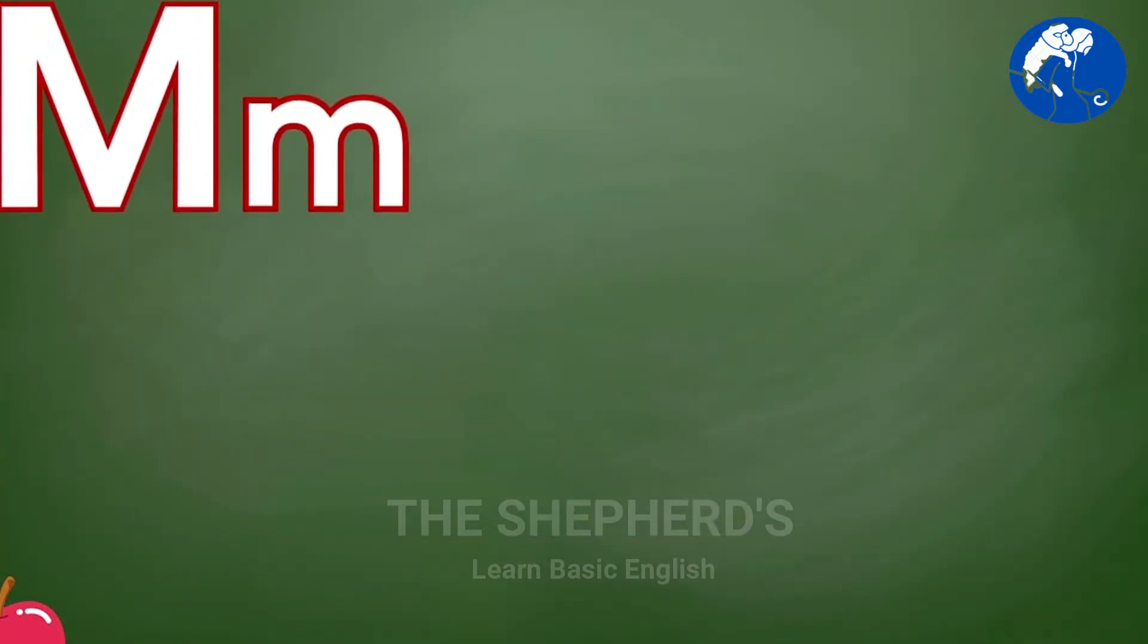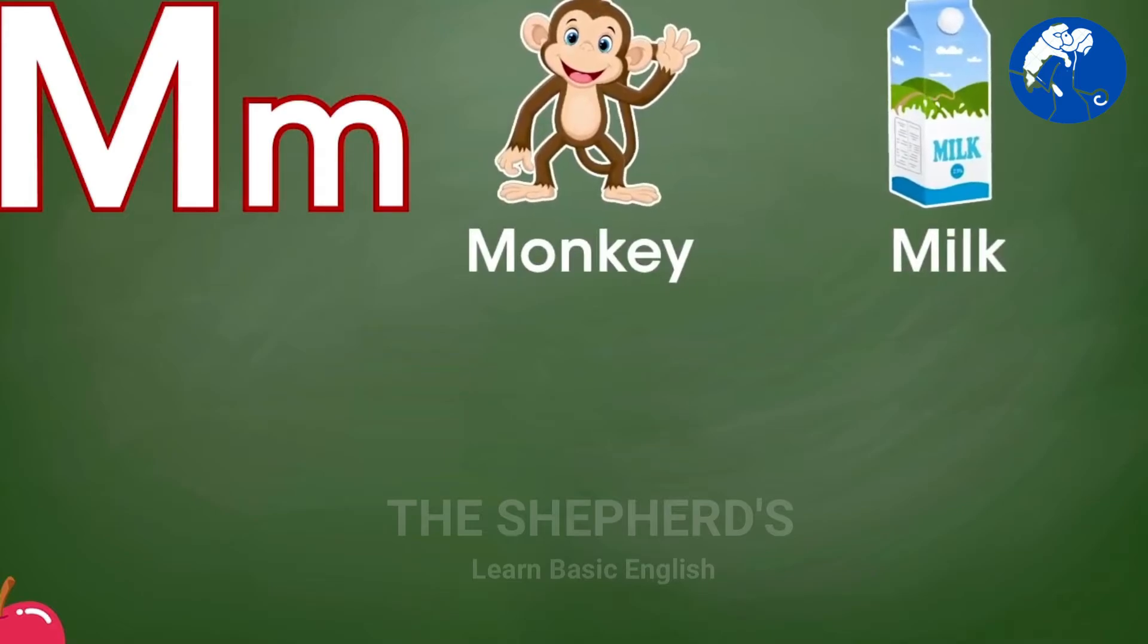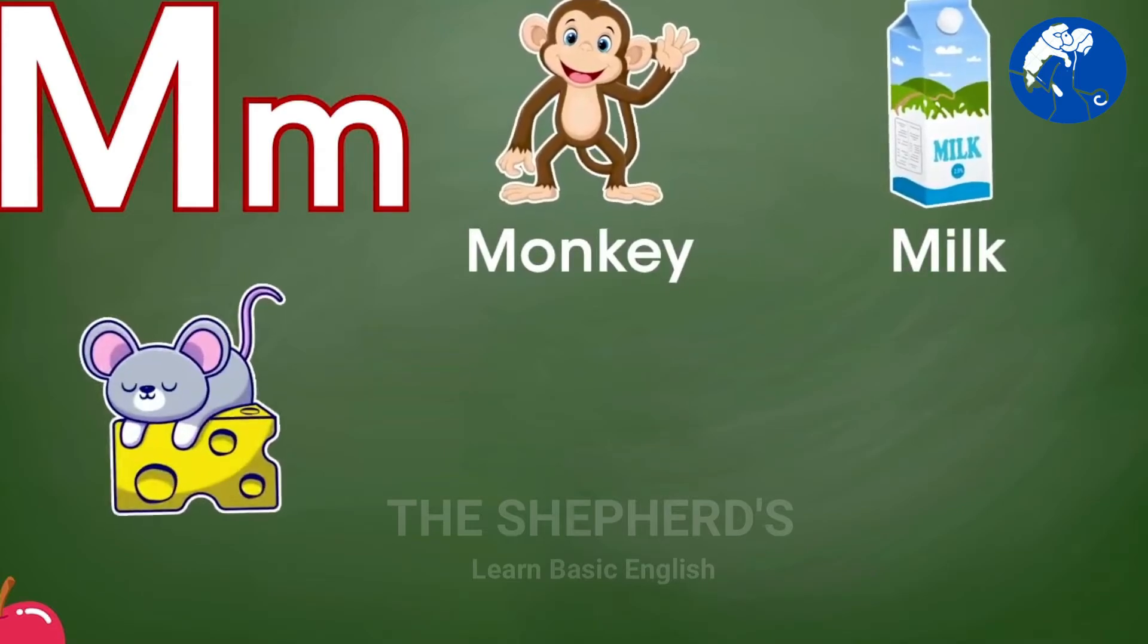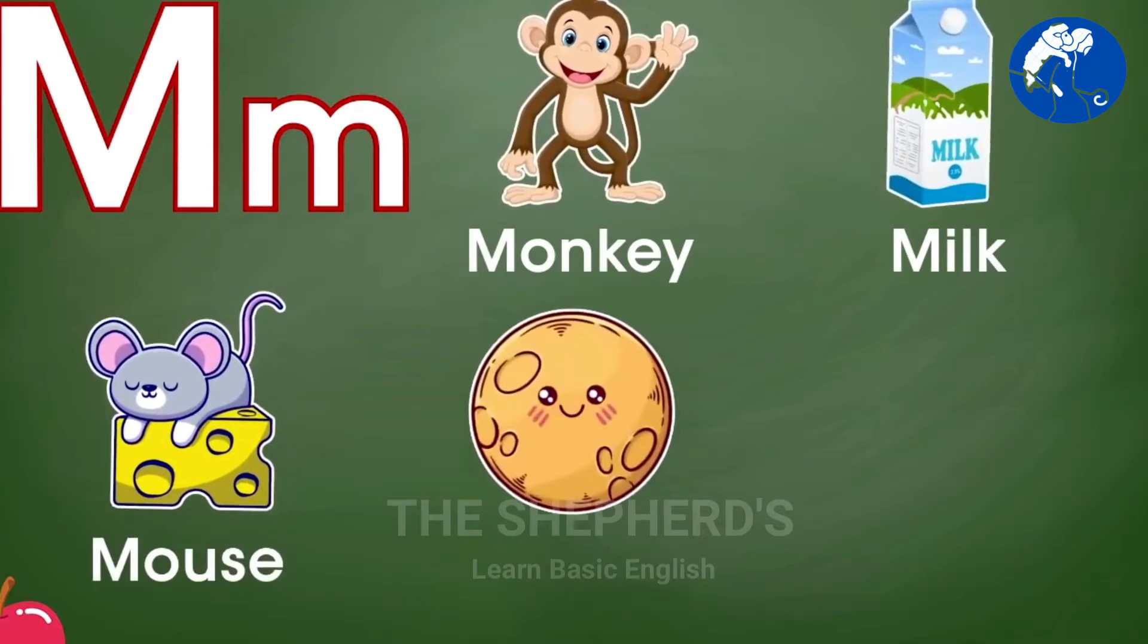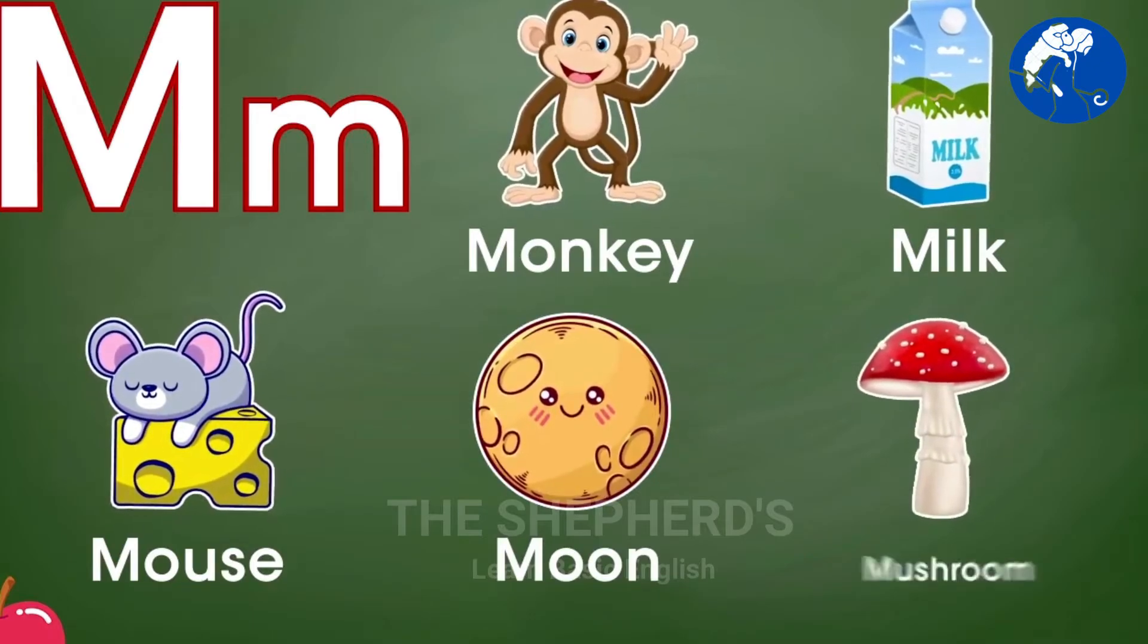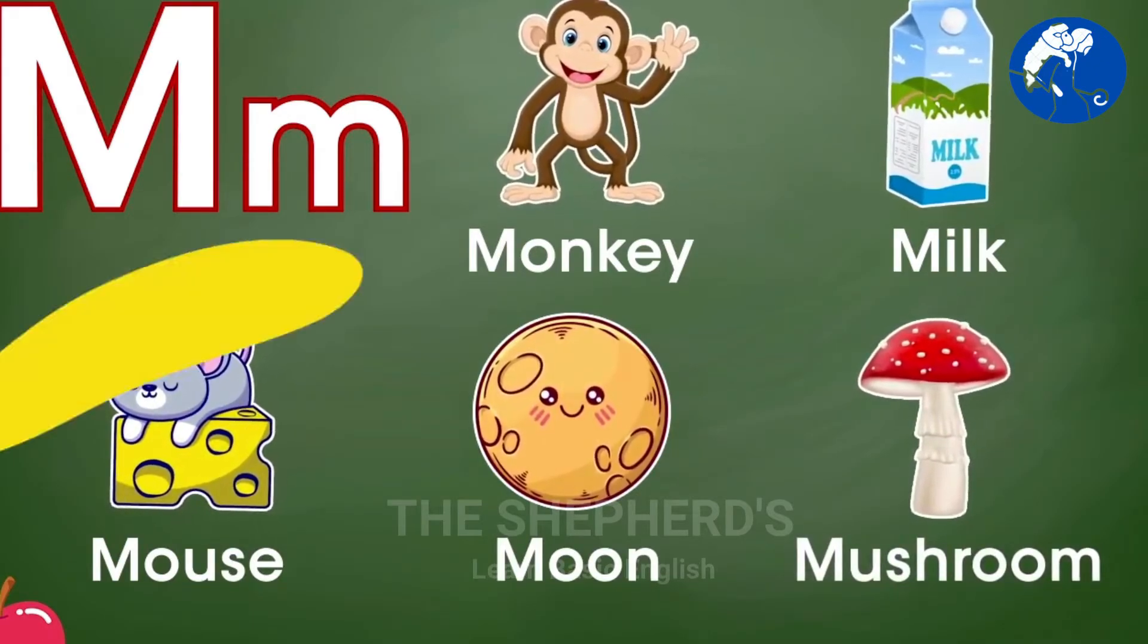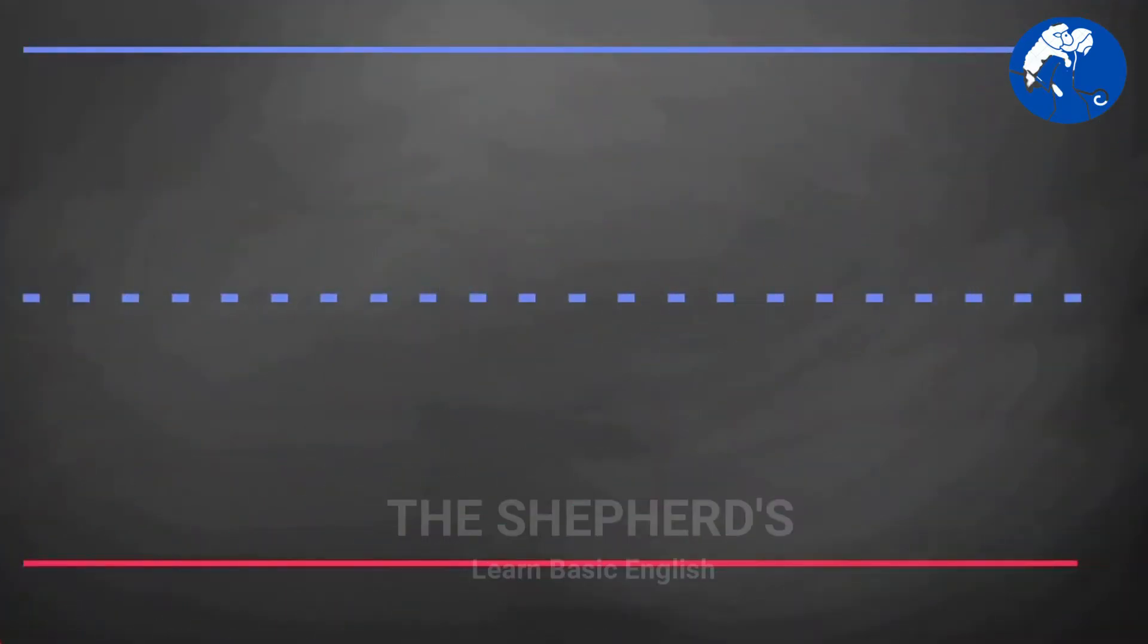M is for Monkey, Milk, Mouse, Moon. Let's write the next letter.